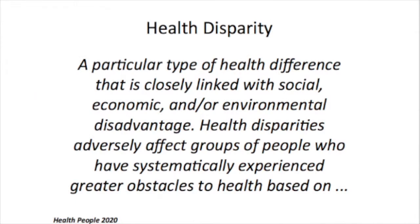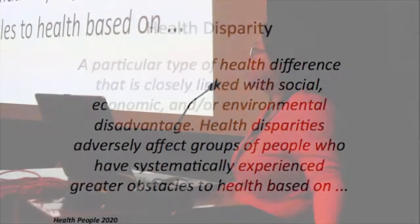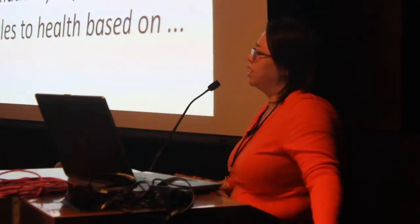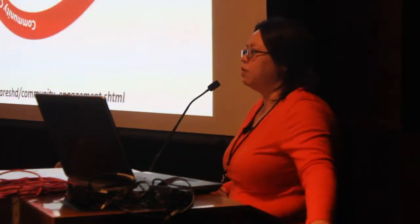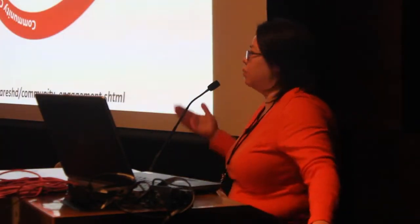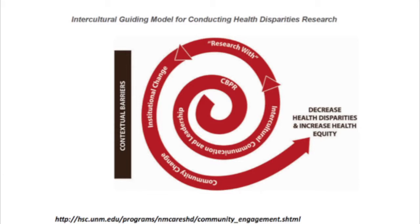Just so we're on the same page: the Healthy People 2020 definition of health disparities is a particular type of health difference that is closely linked to social, economic, and/or environmental disadvantage — so it's not talking about biological differences. An example of a biological difference would be breast cancer rates: women have more breast cancer than men, but that's biological.